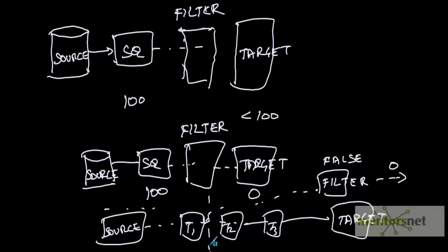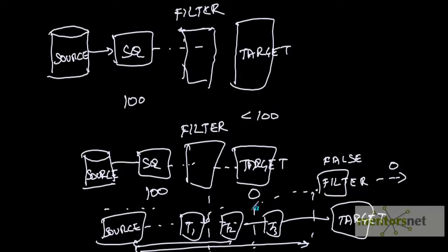By putting the filter transformation with a false condition at an appropriate place you can stop the flow of records there. You can see the performance of the session mapping up to that point, then move it further along and see performance till the next point. By moving the filter transformation with a false condition to various different places, it acts as a logical stop — no records flow out of it — and you can identify which transformation is causing the bottleneck.